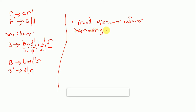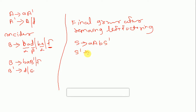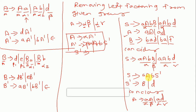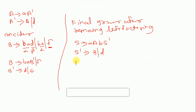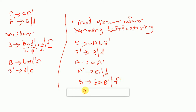The final grammar after removing left factoring is: S gives a a b S-dash; S-dash gives b slash d. A gives a A-dash; A-dash gives capital A slash d. B gives b a B-dash slash f; B-dash gives d slash epsilon. I hope you understood left recursion and left factoring. Thank you.